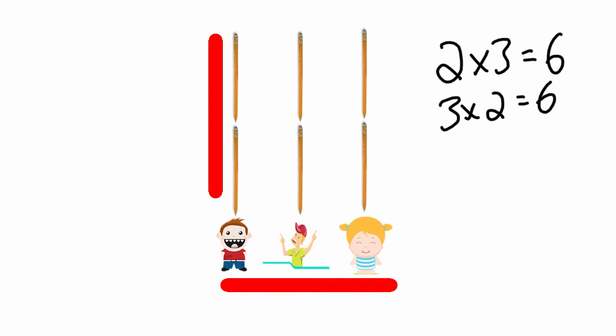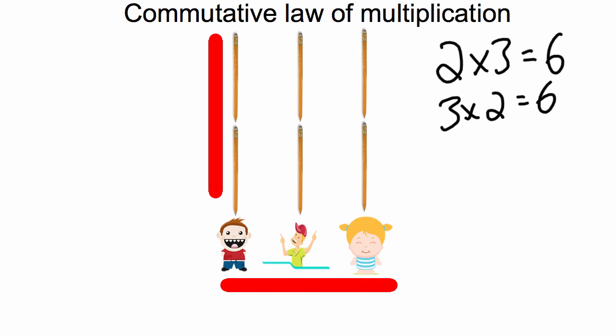That is what we call the commutative law of multiplication. For example, if I got four times two equals eight, well, two times four equals eight as well. It's the same way frontwards and backwards.